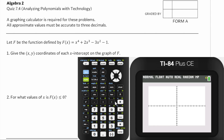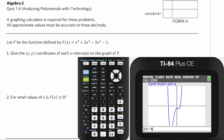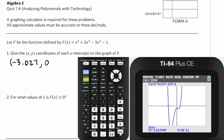We're going to graph this on the standard window and use it to find the coordinates of the x-intercepts. We're going to calculate the zeros. That looks like x equals negative 3, so negative 4 would be a left bound and negative 2 would be a right bound. Give it a guess — it's not exactly negative 3, it's negative 3.027. So the coordinates of the first x-intercept are (-3.027, 0).